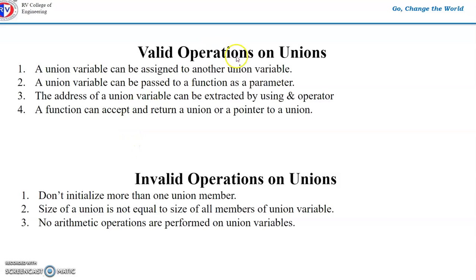Now we will see the valid and invalid operations on unions. Valid operations include: first, a union variable can be assigned to another union variable using the equals operator. Second, a union variable can be passed as a function parameter, as in the case of a structure. Third, the address of a union variable can be extracted using the ampersand operator. Fourth, a function can accept and return a union or a pointer to a union.